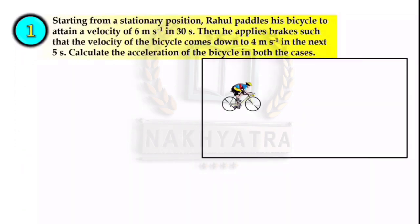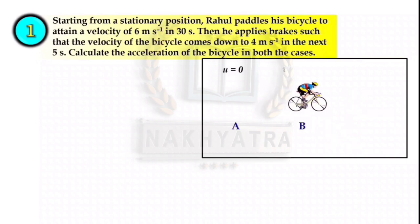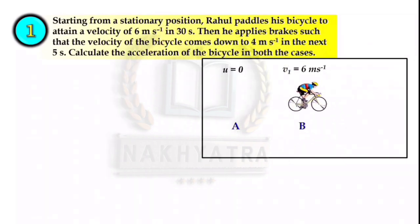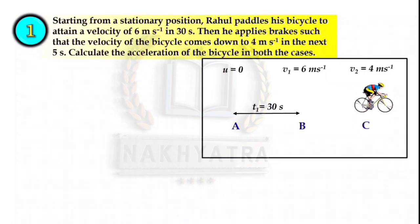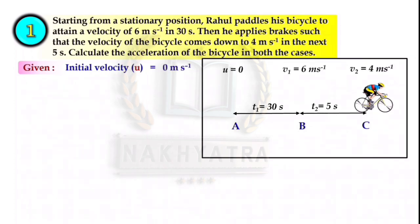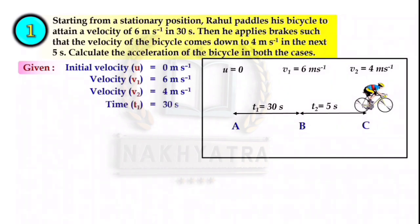Rahul starts paddling from a stationary position at point A where initial velocity U = 0, and reaches point B where velocity V1 = 6 m/s. Time taken from A to B is T1 = 30 seconds. After applying brakes, velocity comes down to V2 = 4 m/s at point C, in the next T2 = 5 seconds. So the given values are: U = 0 m/s, V1 = 6 m/s, V2 = 4 m/s, T1 = 30 s, T2 = 5 s.